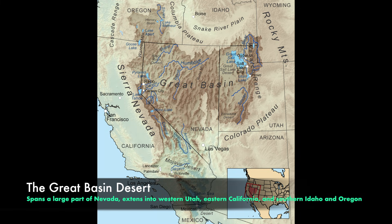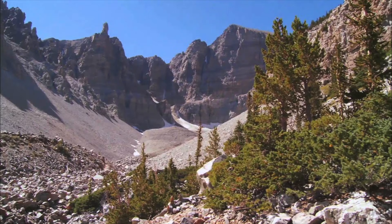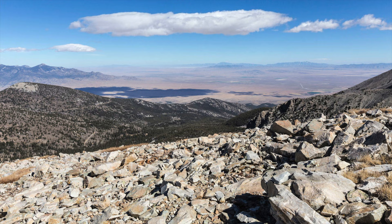The Great Basin Desert is both the highest elevation and northernmost of the four North American deserts and has very cold winters. The seasonal distribution of precipitation varies with latitude, but temperatures limit the growing season to summer.